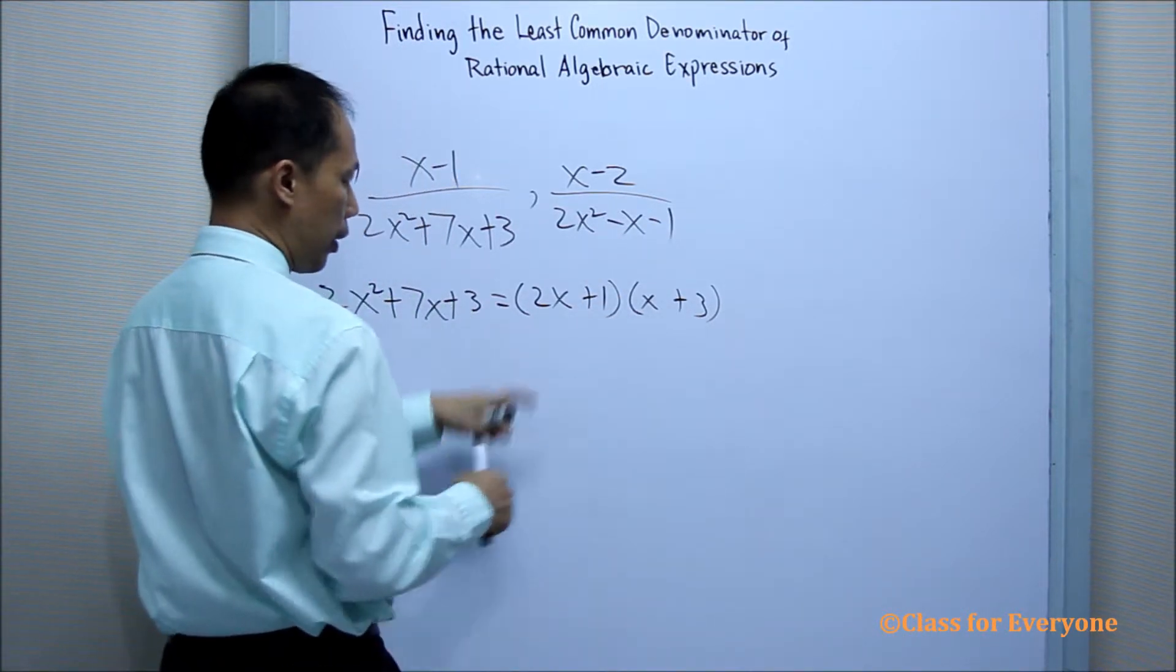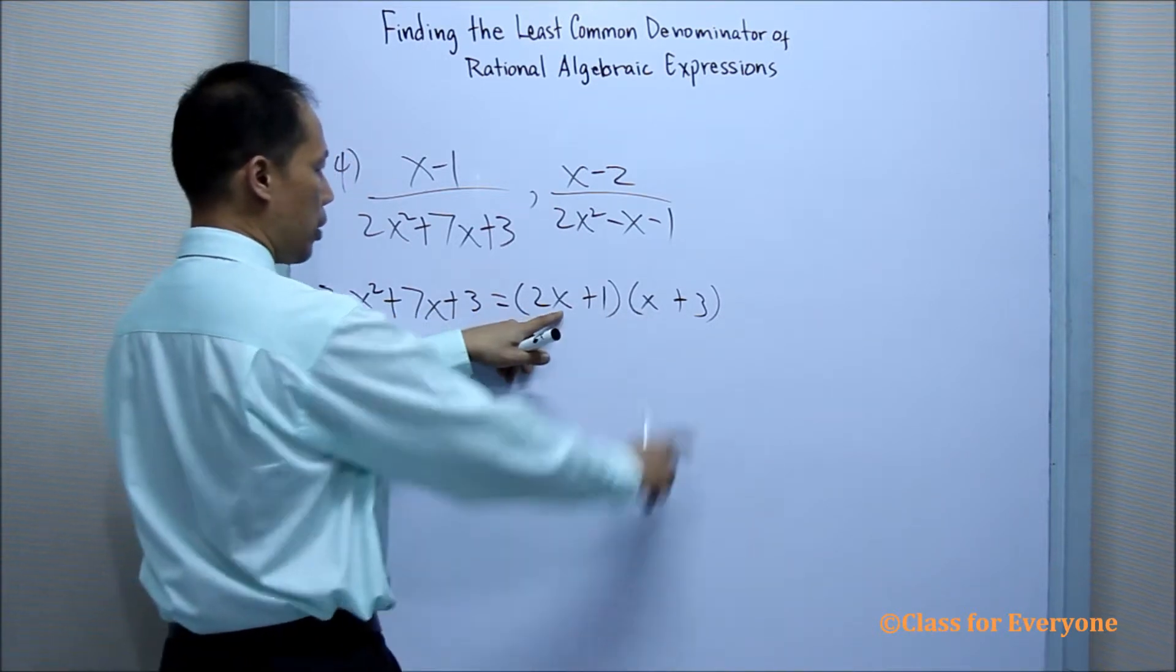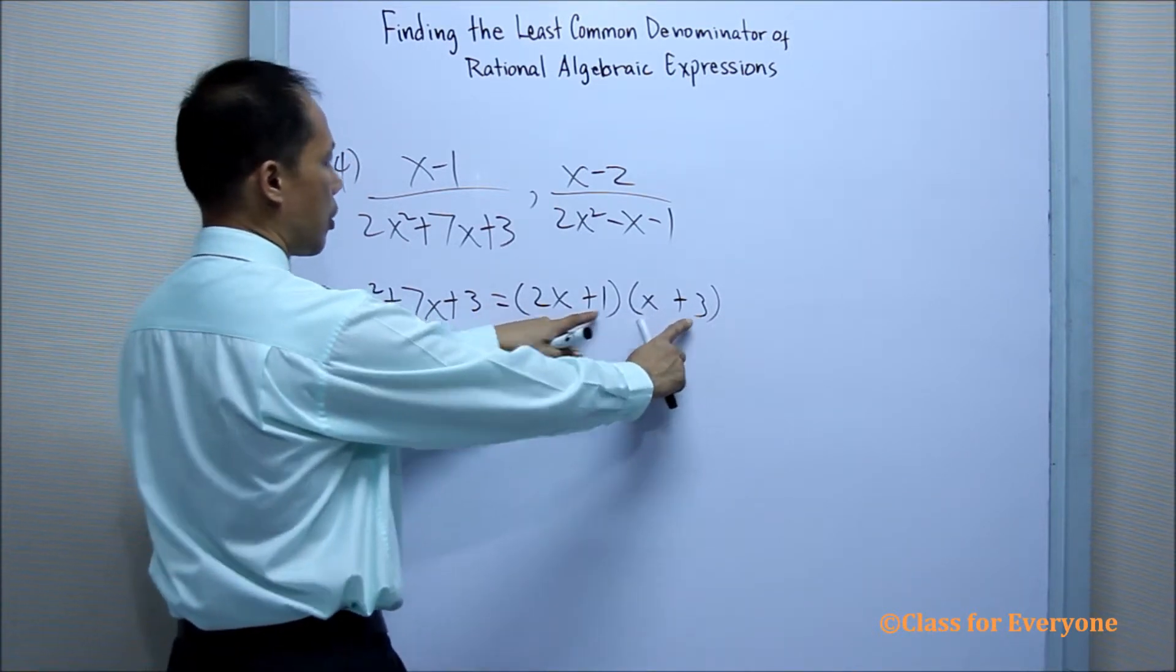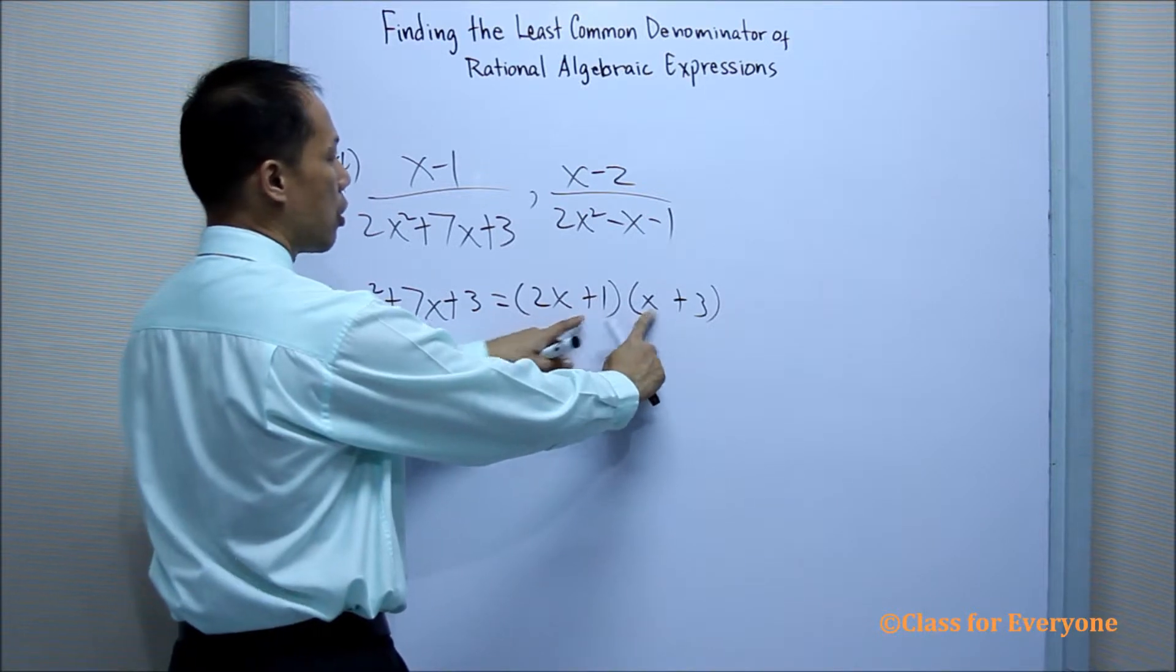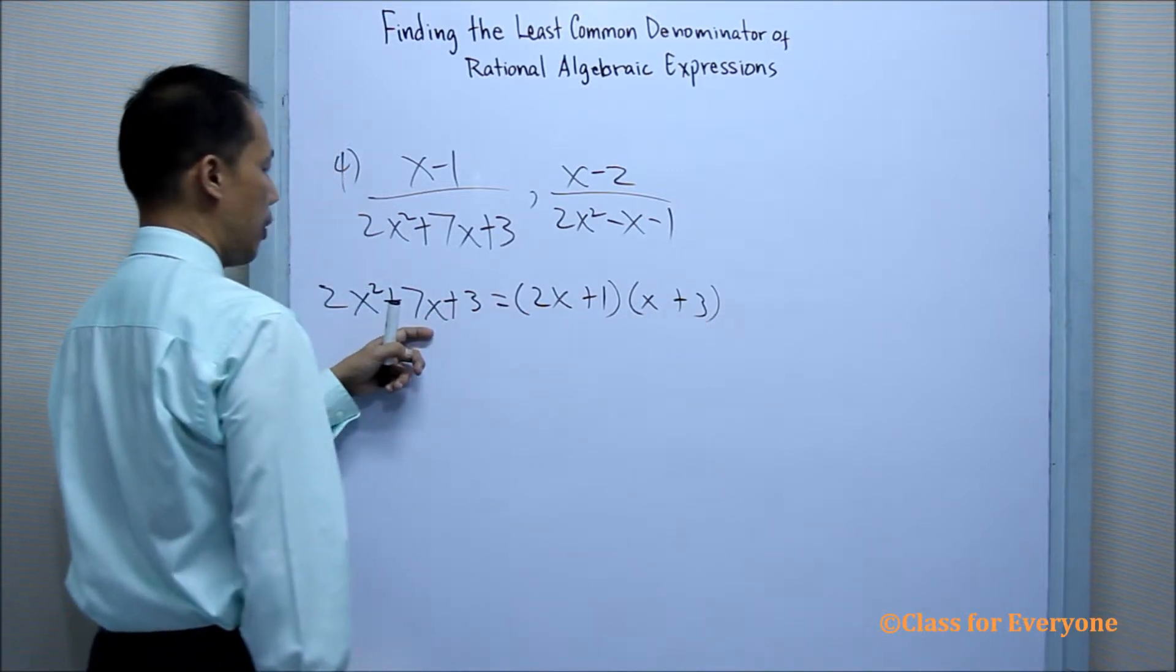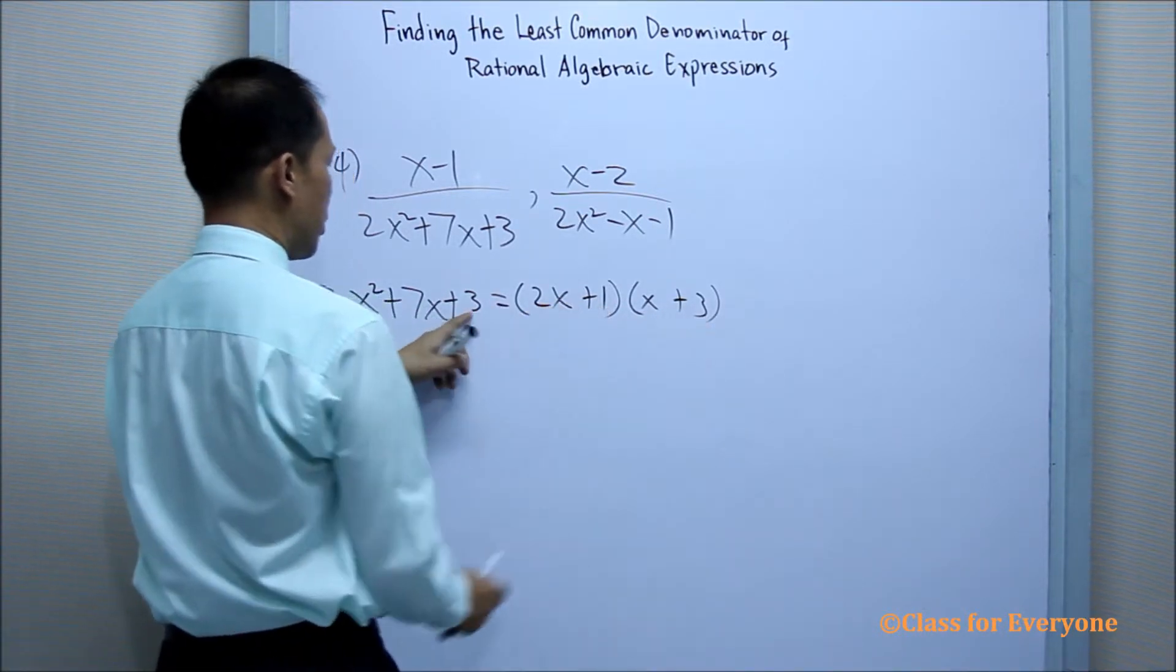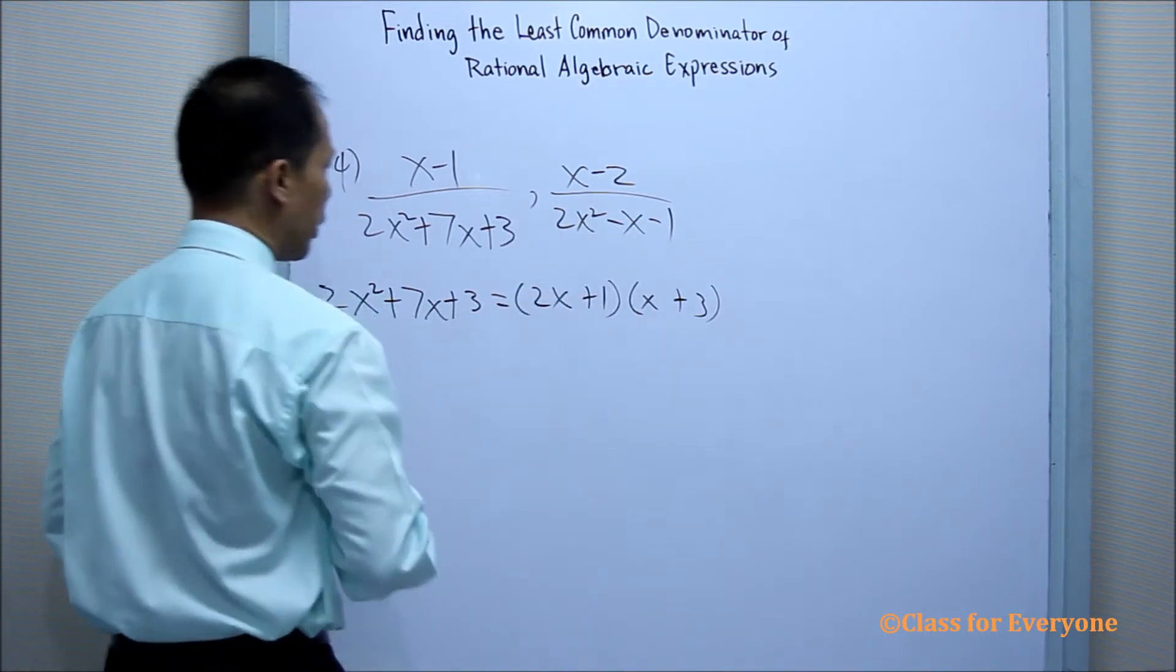Using the FOIL, 2x times x is 2x squared. 2x times 3 is 6x. 1 times x is x plus 6x is 7x. 1 times 3 is 3. Now we are going to factor this.